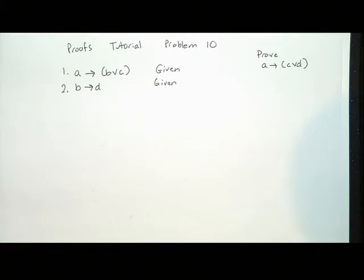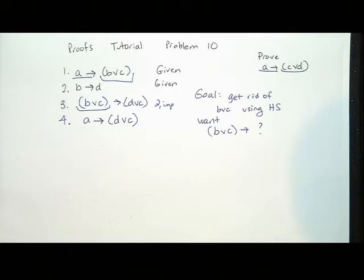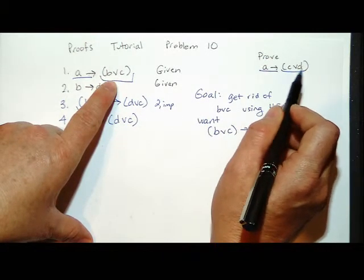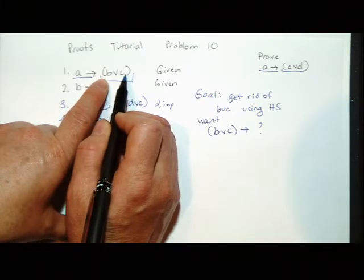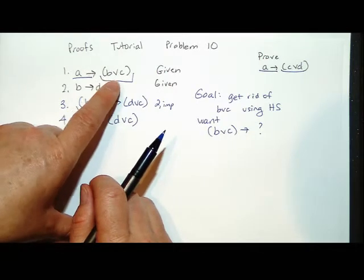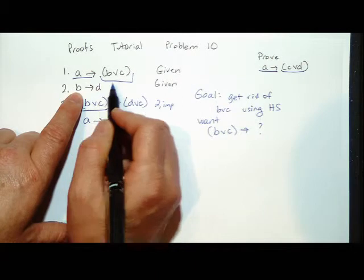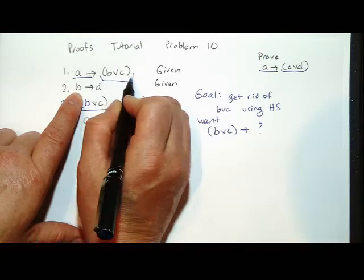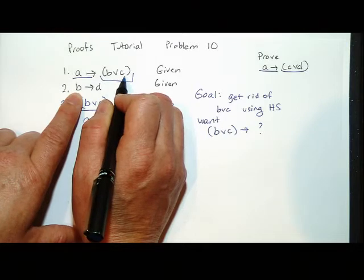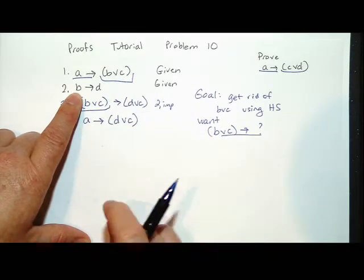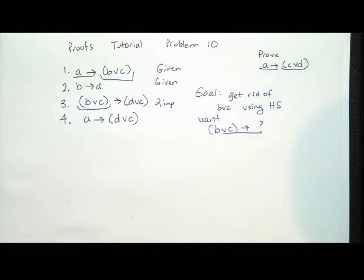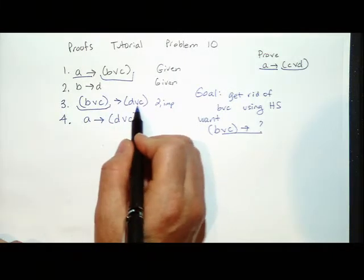When looking at this, we want to get rid of the B or C and somehow get C or D. What I'm focused on is getting rid of B or C in this implication because it doesn't match what's on the right-hand side of my proof statement. Looking at line two, I have B implies D. The only rule that lets me combine two implications and gets rid of stuff is hypothetical syllogism. For hypothetical syllogism, the right-hand side of one implication must match the left-hand side of another.